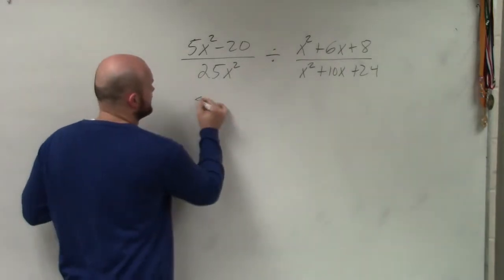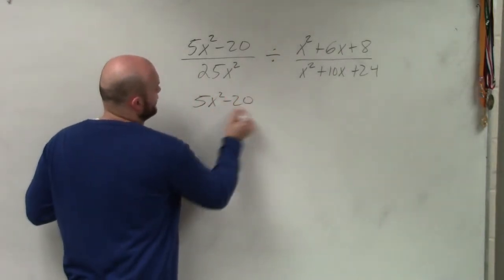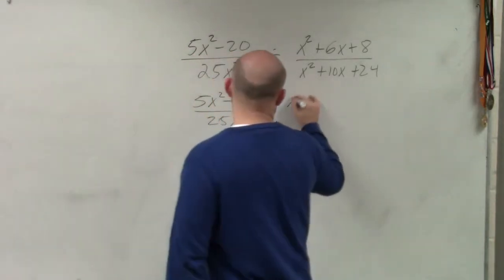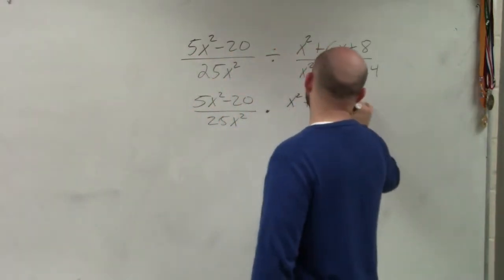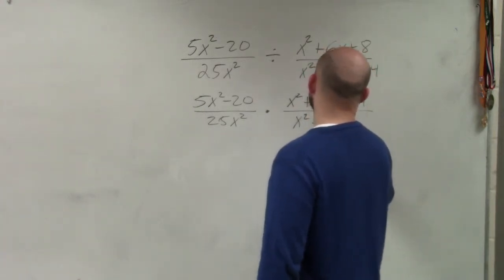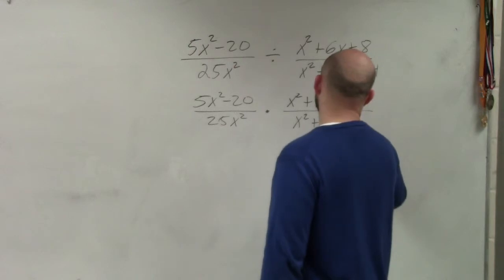So I'm going to rewrite this as (5x² - 20)/(25x²) times (x² + 10x + 24)/(x² + 6x + 8). OK?